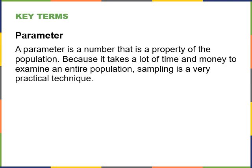A parameter is a number that is a property of the population. Because it takes a lot of time and money to examine an entire population, sampling is a very practical technique. The larger the overall population, the more expensive and time-consuming it's going to be to contact everybody, have them fill out a survey, and process all of those surveys. Because of that, we typically pull a sample of the population.